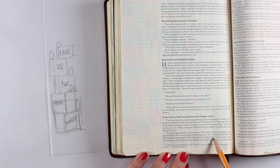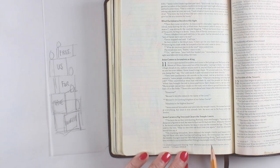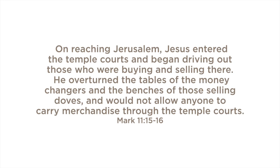And the verse that I'm going to be using today is one that's very familiar to most of us if you've been in the church long. On reaching Jerusalem, Jesus entered the temple courts and began driving out those who were buying and selling there. He overturned the tables of the money changers and the benches of those selling doves and would not allow anyone to carry merchandise through the temple courts.